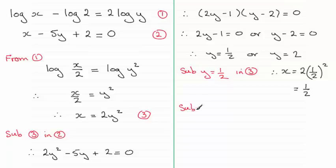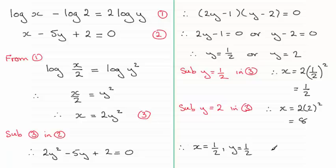I do exactly the same again. This time, I'm going to substitute y equals two in equation three. And that gives me x equaling two times two squared, which gives me eight. So we therefore have two sets of solutions. We have x equals a half when y equals a half, or the other solution is x equals eight when y equals two. Okay?